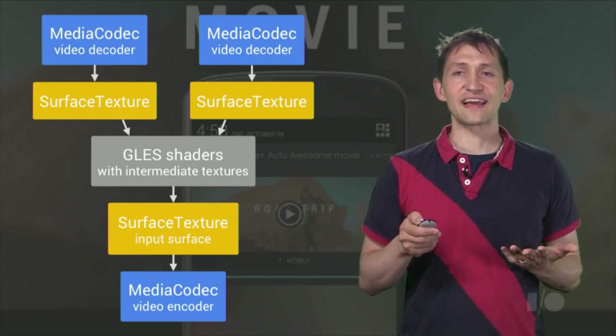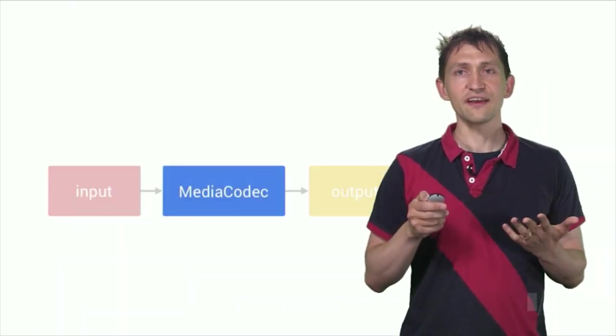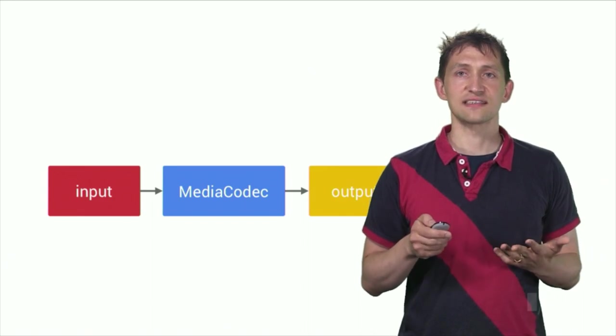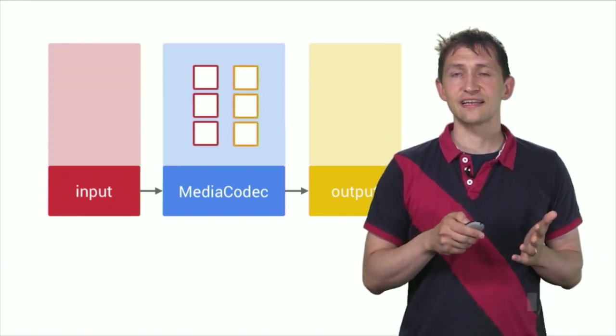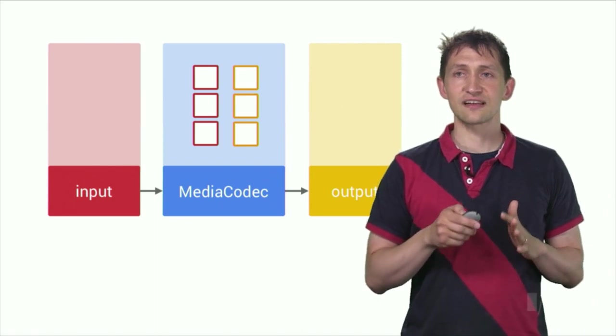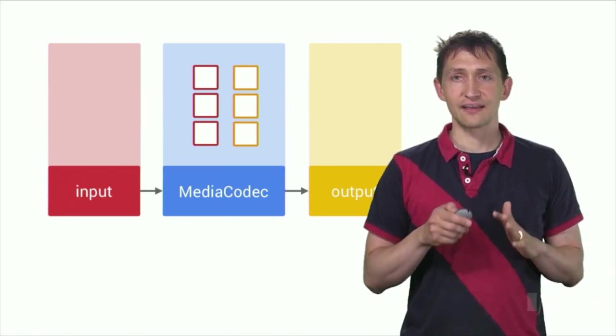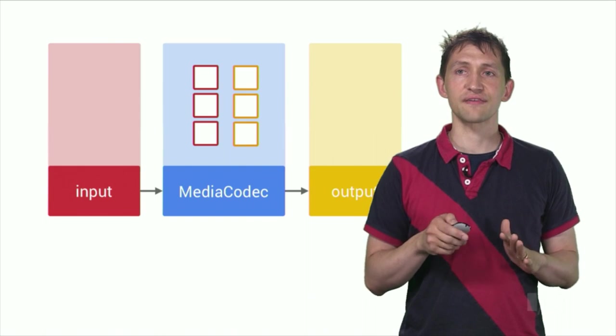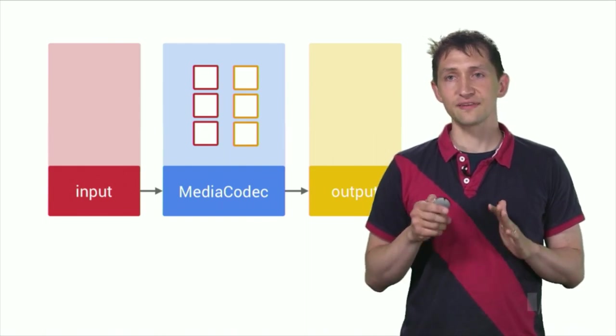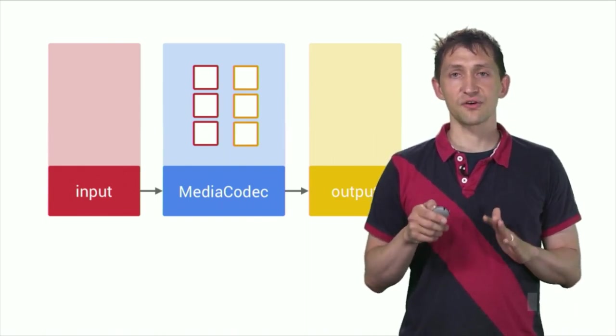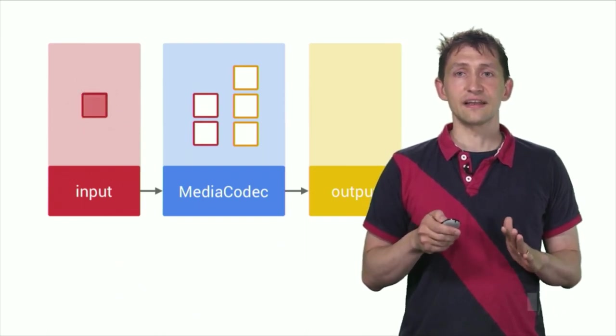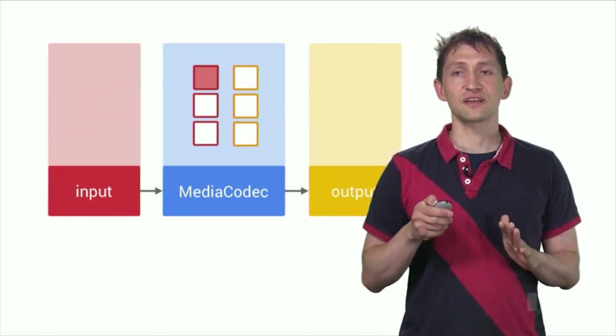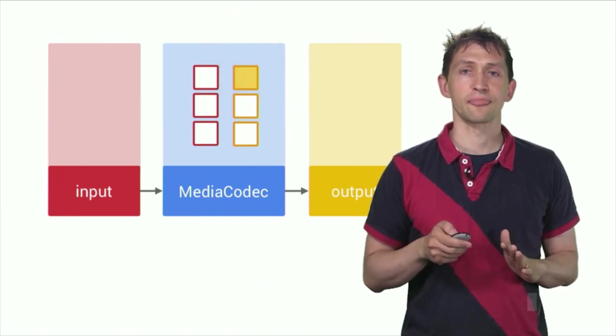So how do Media Codecs work? Media Codec, at its core, is a signal processor that produces output data from input data. It is processing data asynchronously and uses a set of input and output buffers. At a simplistic level, the client requests an empty input buffer, fills it up with data, and sends it to the codec for processing. The codec uses up the data and transforms it into one of its empty output buffers.